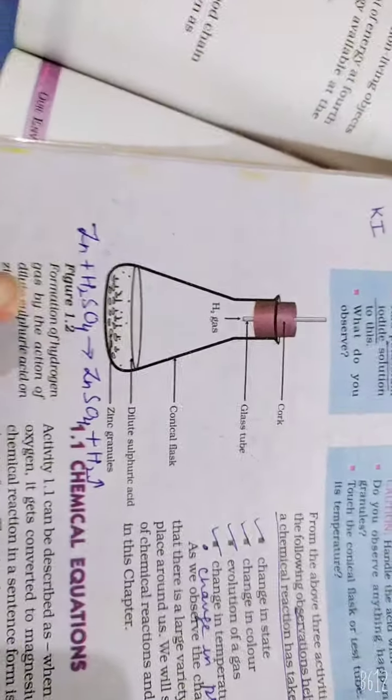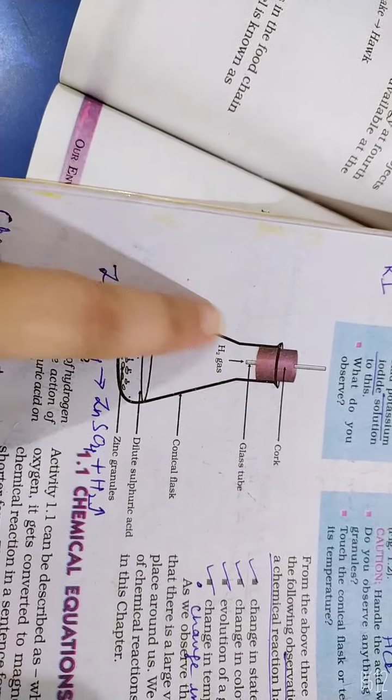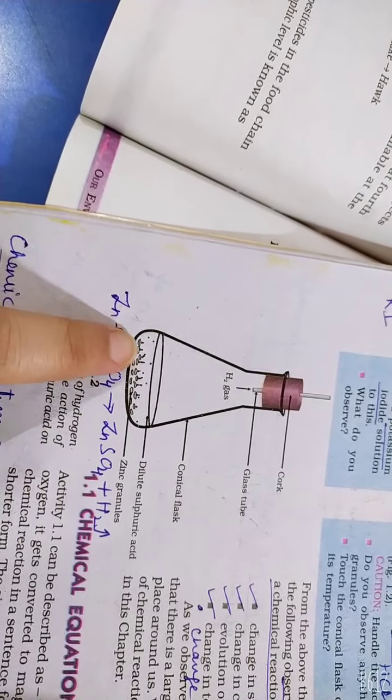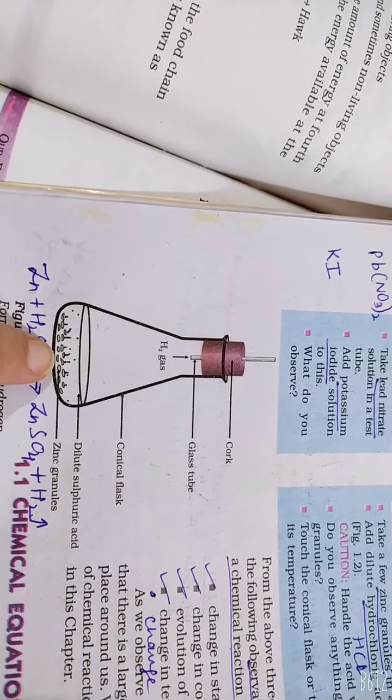This is a conical flask. It is cone-shaped. In a conical flask, we have to use zinc granules.